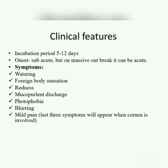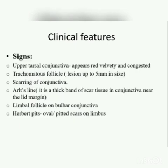Let's discuss the signs of trachoma from which we can diagnose the situation easily. The upper tarsal conjunctiva appears red, velvety, and congested with trachomatous follicles up to 5 mm in size. Scarring of the conjunctiva and Arlt's line are visible — Arlt's line is a thick band of scar tissue in the conjunctiva near the mid-lid margin. Limbal follicles on the bulbar conjunctiva and Herbert pitted scars on the limbus can also be seen.